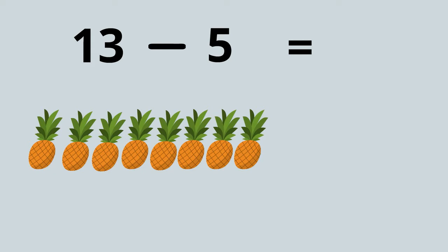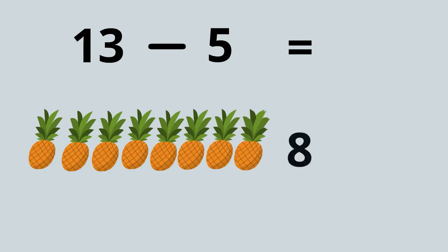How many have we got left? I think it's 8. Should we count? 1, 2, 3, 4, 5, 6, 7, 8. It's 8. So 13 take away 5 equals 8.